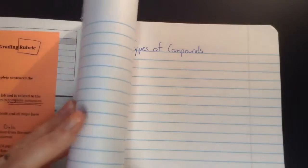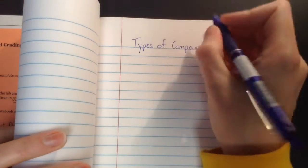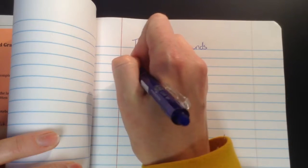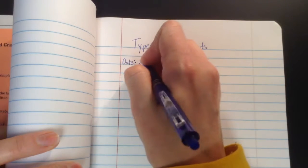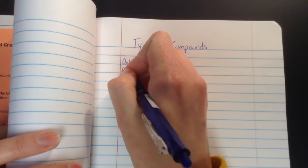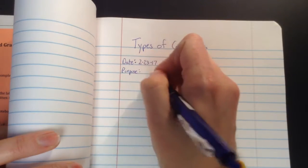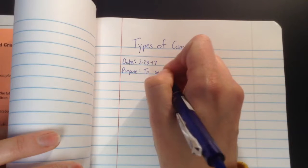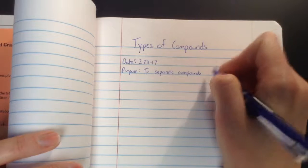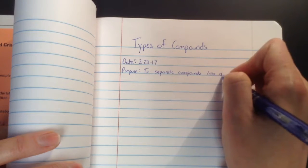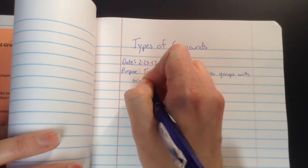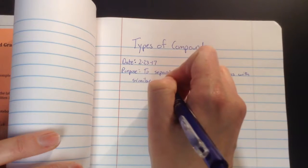The date that I need to write, I'm going to just follow this little rubric over here. The date that I need to write is whatever date it is. The date that I'm making this video is 2-23-17. Our purpose for this lab is to separate compounds into groups with similar properties.